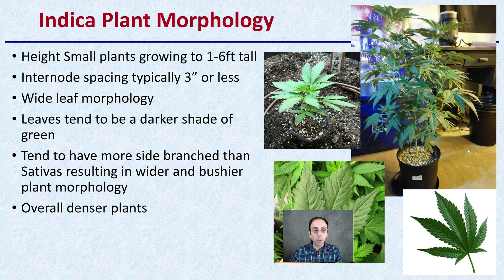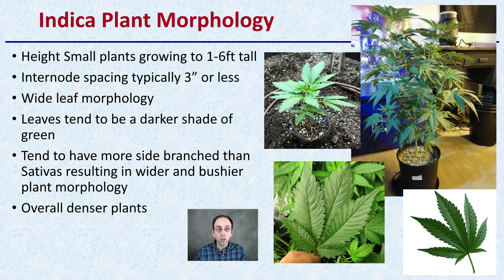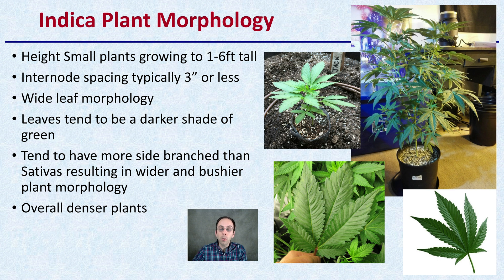Now the indica plant morphology — what are those physical characteristics? The height is small growing, usually one to six feet in height, and the internode spacing is typically three inches or less. The leaf morphology tends to be a very wide appearance, as we can clearly see in this image, and the leaves tend to be a slightly darker shade of green compared to sativas. They tend to have more side branching than sativas, resulting in a wider, bushier plant morphology overall, which causes denser plants in their general structure.